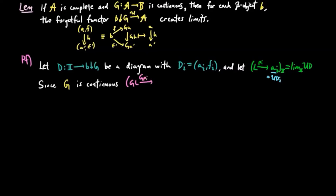Since G is continuous, the cone GPI from GL to GAI is the limit of GUD. But the image of D in B over G is a cone on GUD.